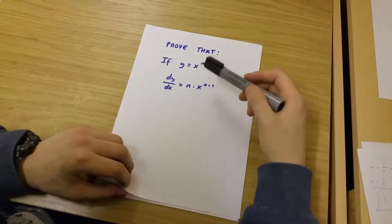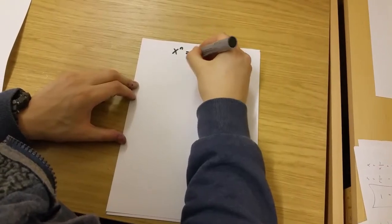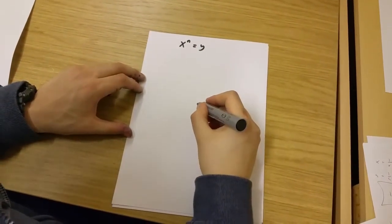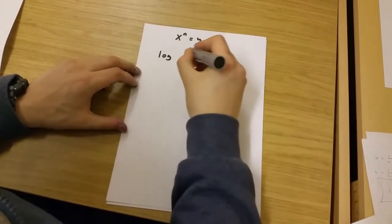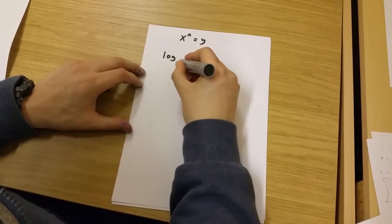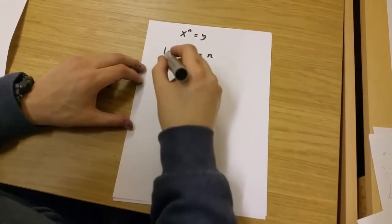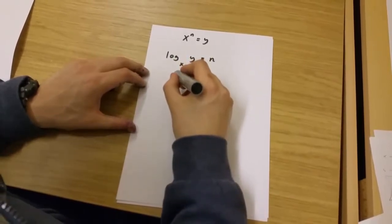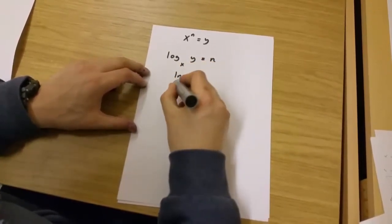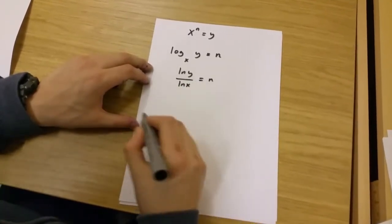To prove that this is the case, you first have to say that x to the power of n is equal to y. From here we get the logarithm of y to the base x is equal to n. But the logarithm of y to the base x is the same as ln y over ln x, which is equal to n.